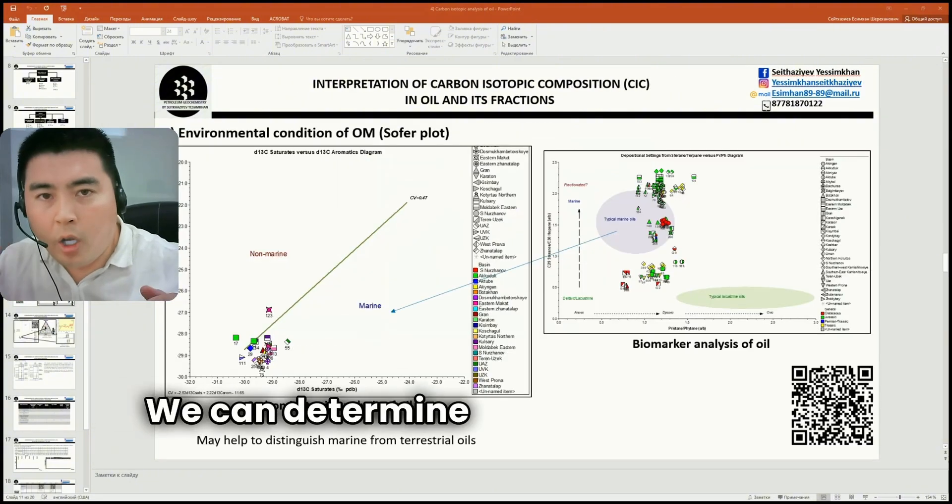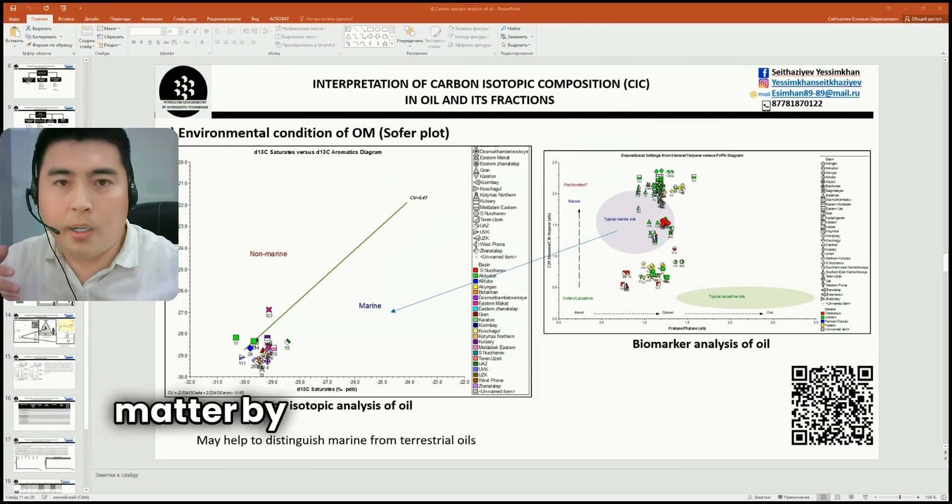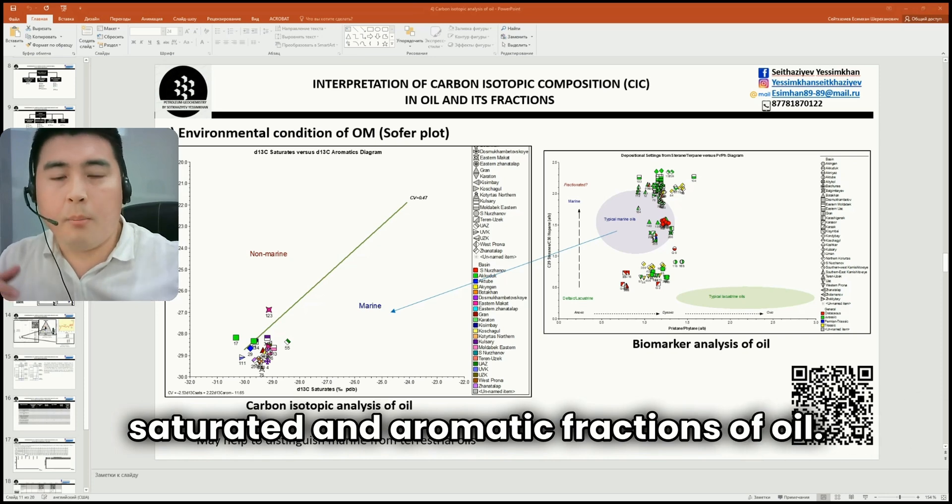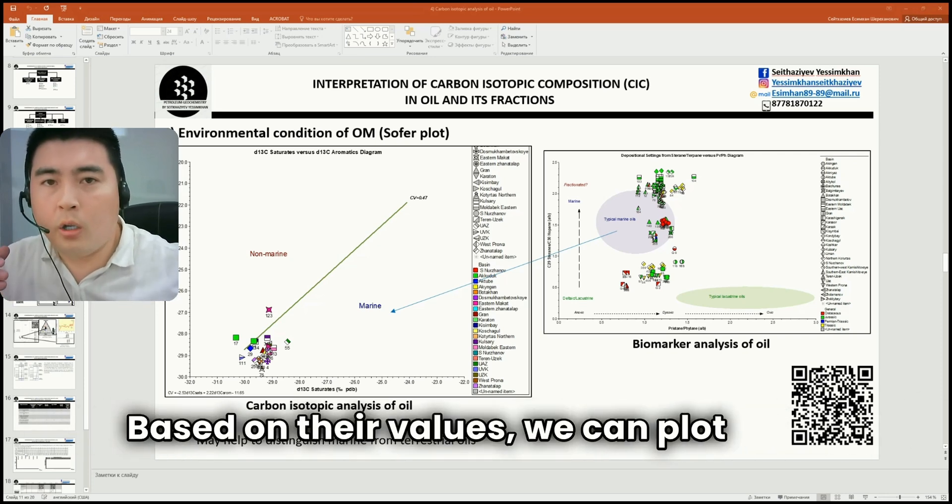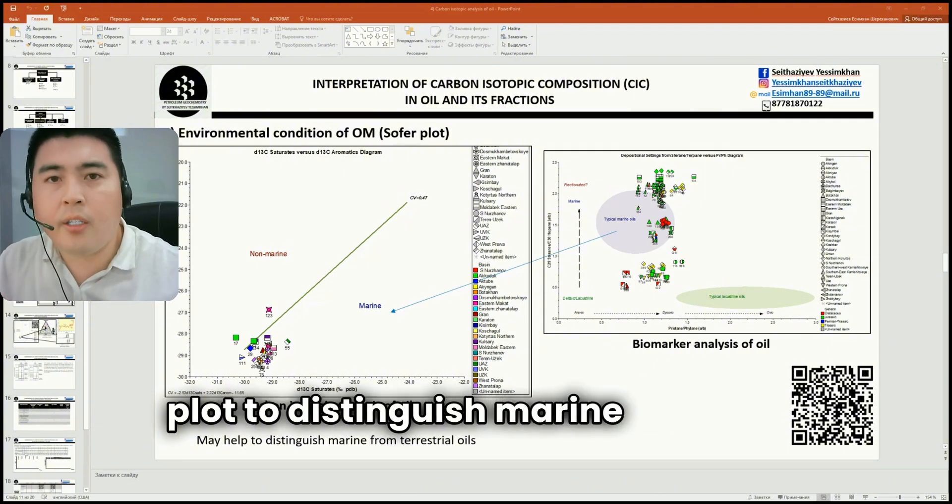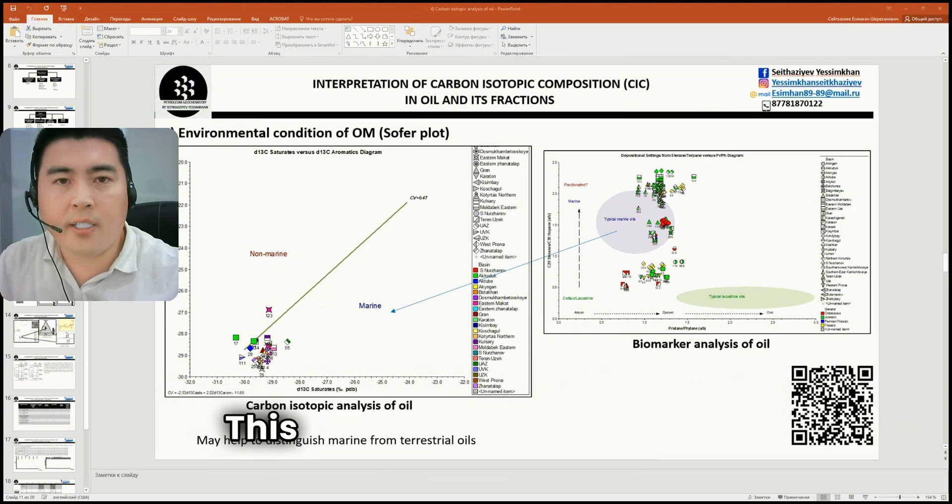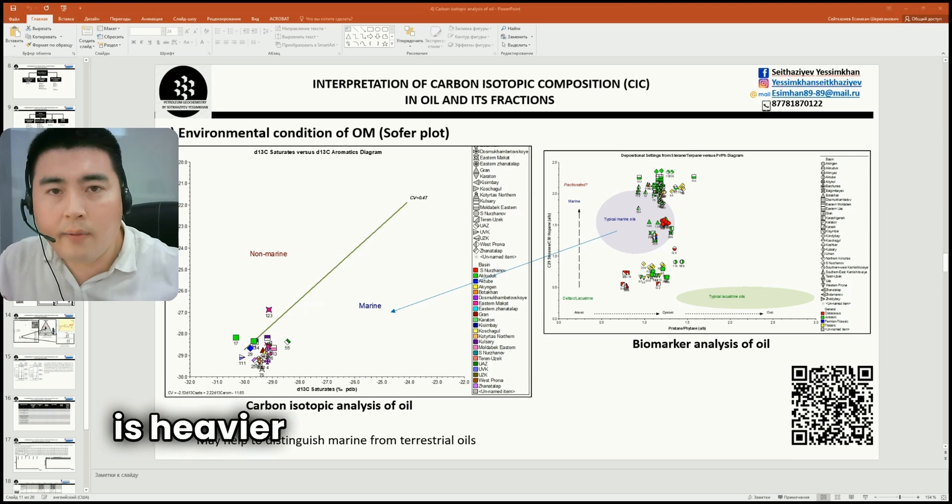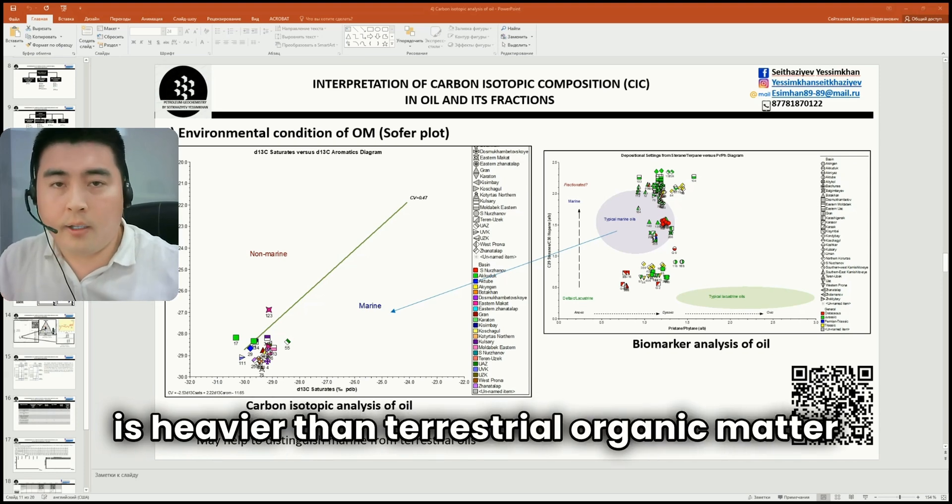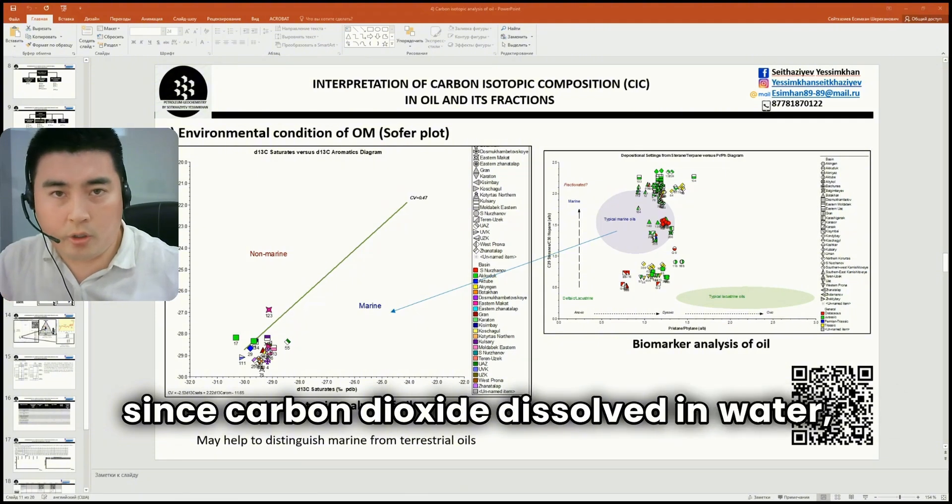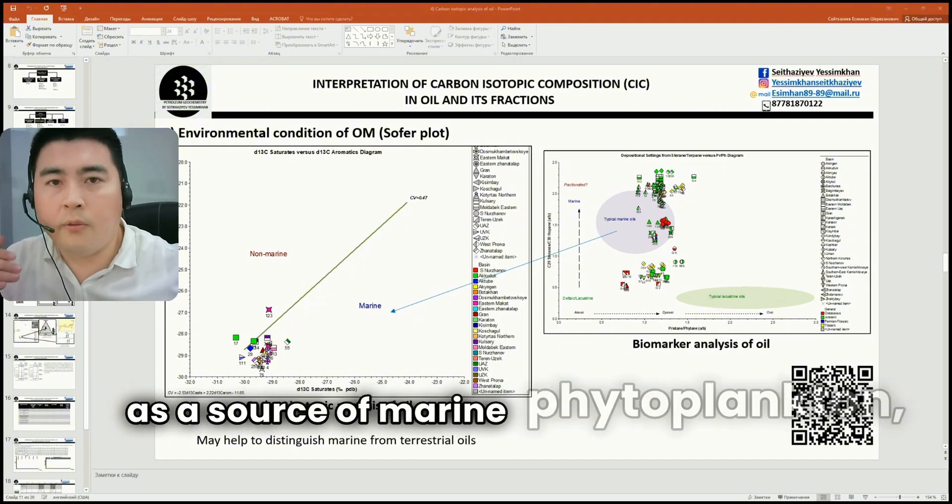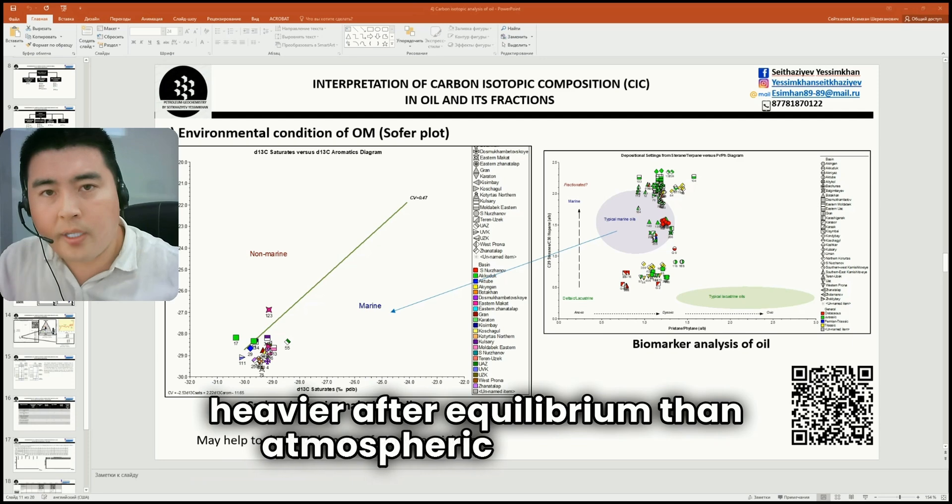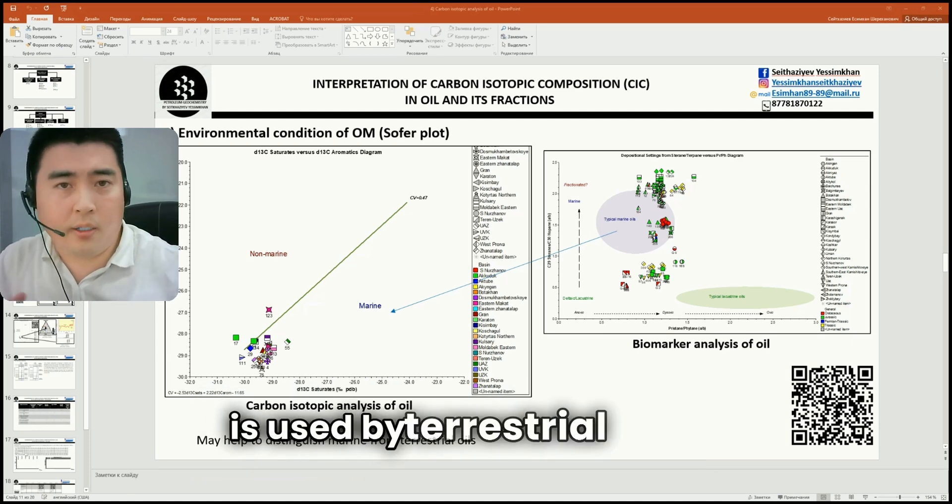We can determine the environmental condition of organic matter by plotting carbon isotope values of the saturated and aromatic fractions of oil. Based on their values, we can plot a Sofer plot to distinguish marine oils from terrestrial ones. This plot is based on the fact that isotopic composition of marine organic matter is heavier than terrestrial organic matter. Since carbon dioxide dissolves in water, which serves as a source of marine phytoplankton, it is slightly heavier after equilibrium than atmospheric CO2, which is used by terrestrial plants.